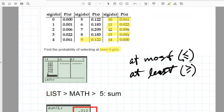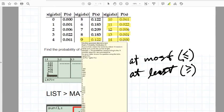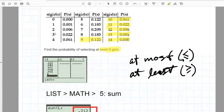By the way, at most, which is the kind of partner phrase, if you will, to at least, means that we'd be looking at that much or less. So if the question had been at most nine girls, it would have been nine girls or fewer.